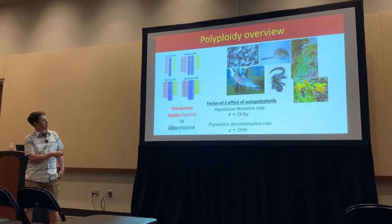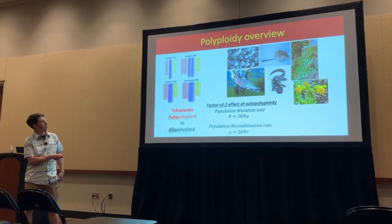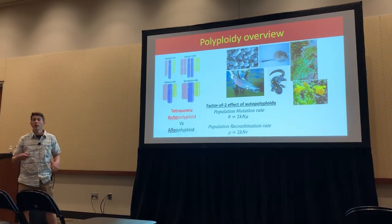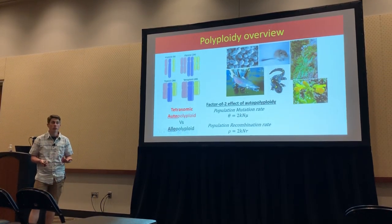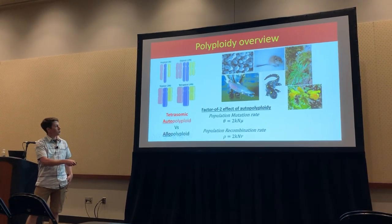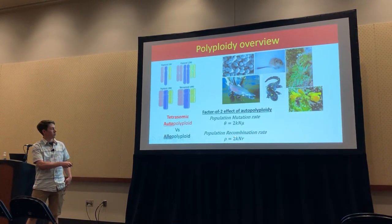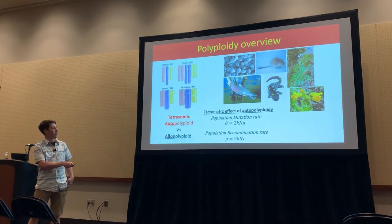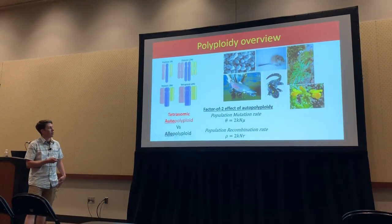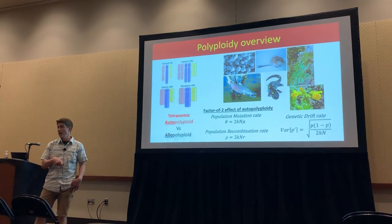That's important because it gives rise to a number of what are called factor-of-two effects of auto-polyploids. For a given population size and a given mutation rate, K here is ploidy, and as ploidy increases, we expect higher rates of nucleotide polymorphism, all else being equal. We also expect higher rates of haplotype diversity, with R being the per-base recombination rate.